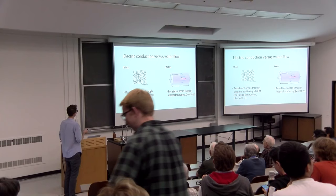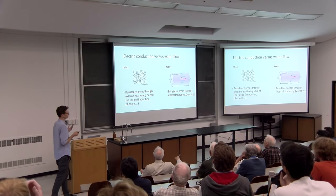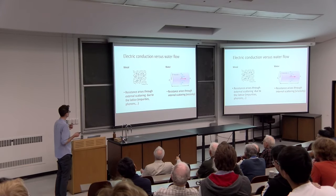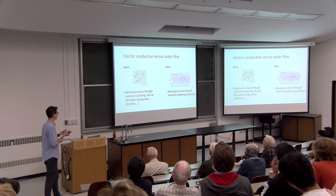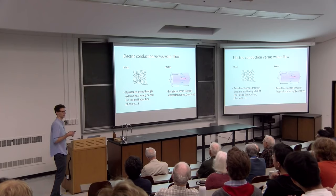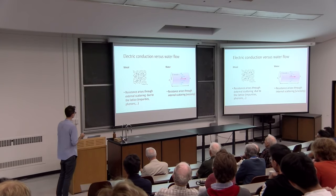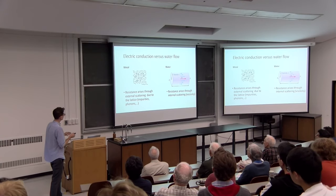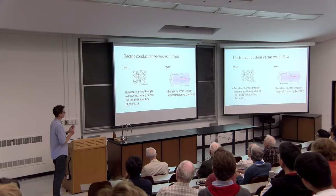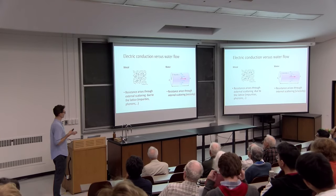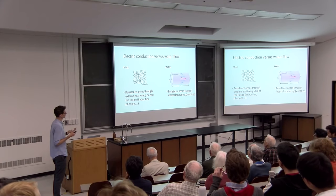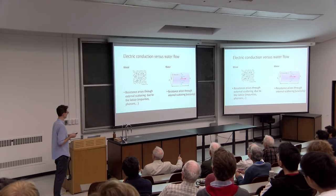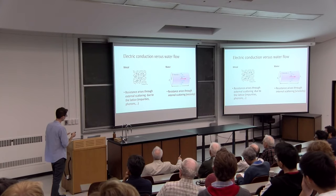The reason the analogy is wrong is that the way electric current is carried in a wire is very different from the way water flows in a pipe. In a metal, resistance arises due to conduction electrons scattering off defects of the ionic lattice — defects could be impurities, vacancies, or phonons. For water in a pipe, it's completely different because there's no lattice; resistance arises through viscosity, which comes from internal scattering between water molecules. That's why most of the time these two are very different.